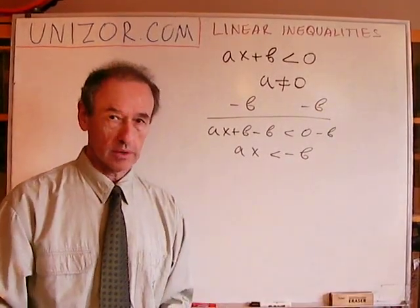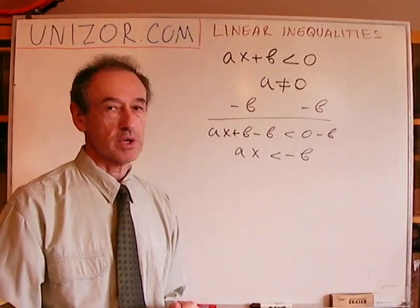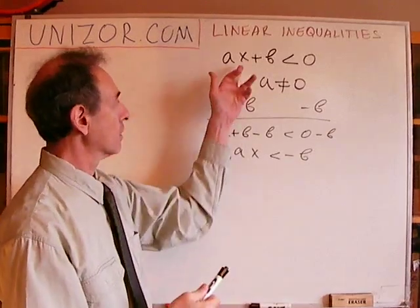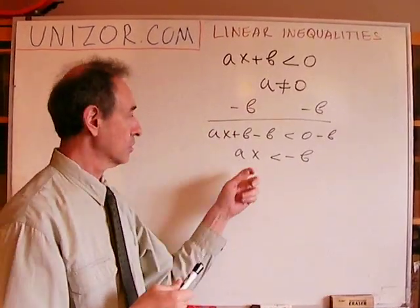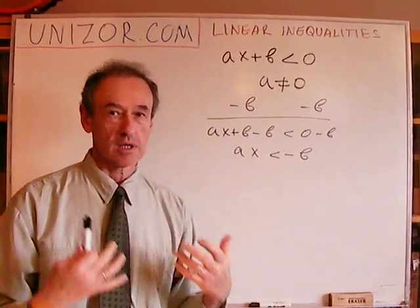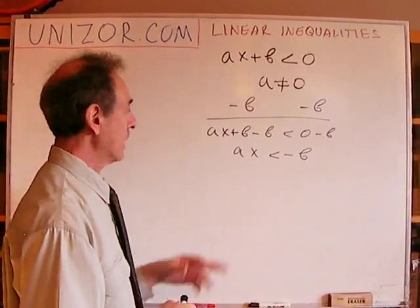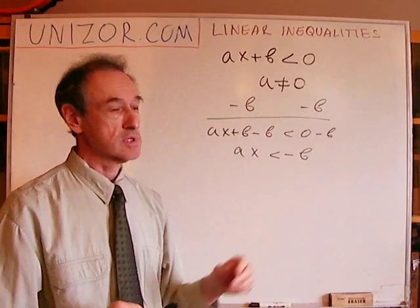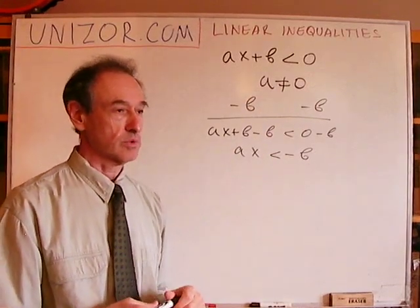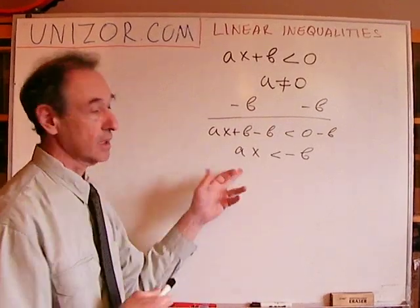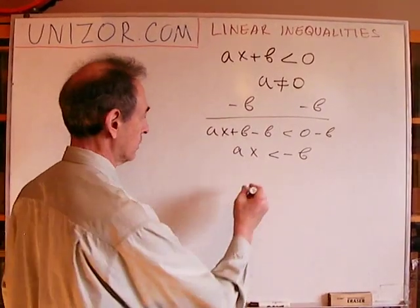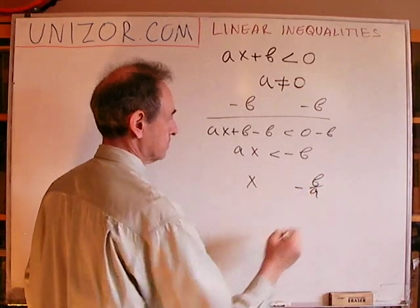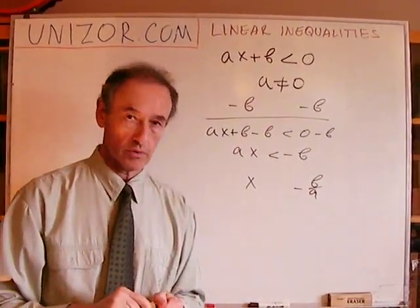That's step one — transforming our original inequality into a form that gives us the condition on the argument. Next, considering a is not equal to zero, we divide by a. On the left we will have x, and on the right we will have minus b over a. Since a is not equal to zero, there is nothing wrong with b over a.